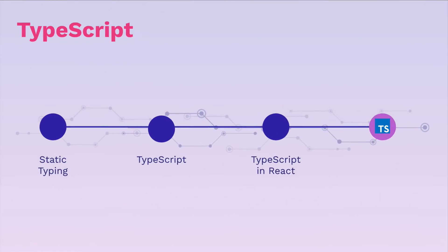We then dive into one of the hottest topics from last year's web developer environment: TypeScript. We're going to learn about static typing and why JavaScript didn't have static typing and instead is dynamically typed. Then we're going to learn how to use TypeScript, what types there are, and how to add them to your project. We're then going to add TypeScript into our React project and see how to add it to your own projects. By the end, once again, you'll master this topic.